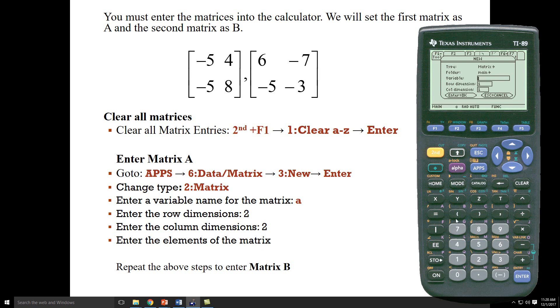I want to name this matrix B. So I'm going to hit alpha, call this B. It has two rows, two columns, and I'll enter the elements of the matrix. Six, negative seven, negative five, and negative three.